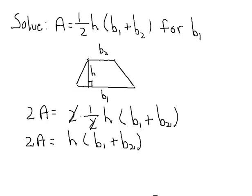Now we'll distribute on the right-hand side, so we have then 2A is equal to h times b sub 1 plus h times b sub 2.